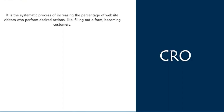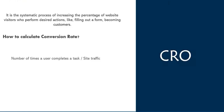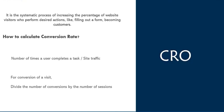How do you calculate a conversion rate? Your site's conversion rate is the number of times a user completes a task divided by your site's traffic. If a user can convert on each visit, such as buying a product, divide the number of conversions by the number of sessions. If you sell a subscription, divide the number of conversions by the number of users.